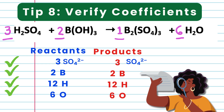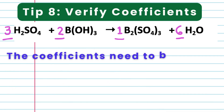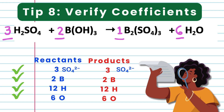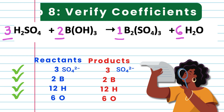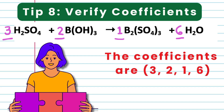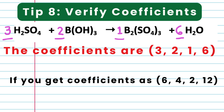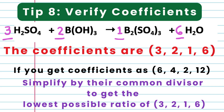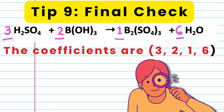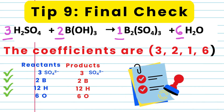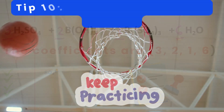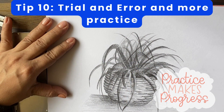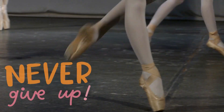Tip 8: Verify the coefficients. Once all atoms are balanced, write down the coefficients to make sure they are in their lowest possible ratio. The balanced equation is 3H2SO4 plus 2B(OH)3 gives B2(SO4)3 plus 6H2O, with coefficients 3, 2, 1, 6. If you get coefficients of 6, 4, 2, 12, you must simplify by their common divisor to get the lowest ratio of 3, 2, 1, 6. Tip 9: Perform a final check to confirm the equation is fully balanced with equal numbers of each type of atom on both sides. Tip 10: Trial and error and more practice. To balance equations, sometimes we have to use a trial and error approach, and the only way we get proficient is by practicing. So let us practice balancing.